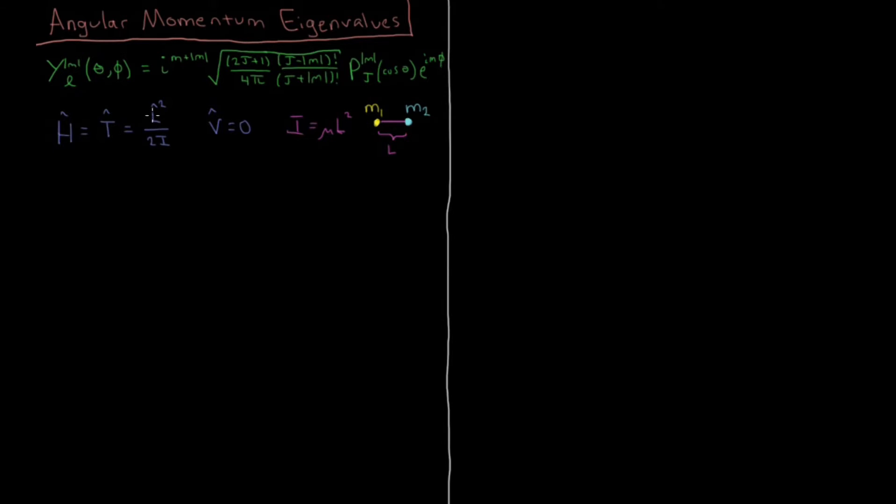we can assign a form to this L squared, this total angular momentum squared operator, and that is that L squared is going to equal minus h-bar squared, because there's a minus h-bar squared in here when you look at the total Hamiltonian, and then times this big gaudy part of the Laplacian without the derivatives of R, which is 1 over sine theta partial with respect to theta,